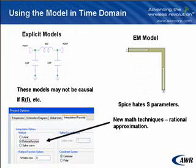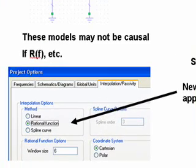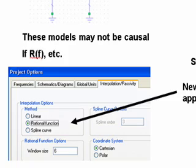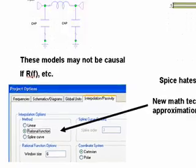For the EM models, there's actually a nice technique now for taking these to time domain. We have new math techniques called rational approximation that mathematicians have worked on. In our software, you would simply go to the project options and under your interpolation tab, you select rational functions. The math of these is set up so that the models coming out to the time domain simulator — be it SPICE or APLAC transient — are causal, passive, and stable.